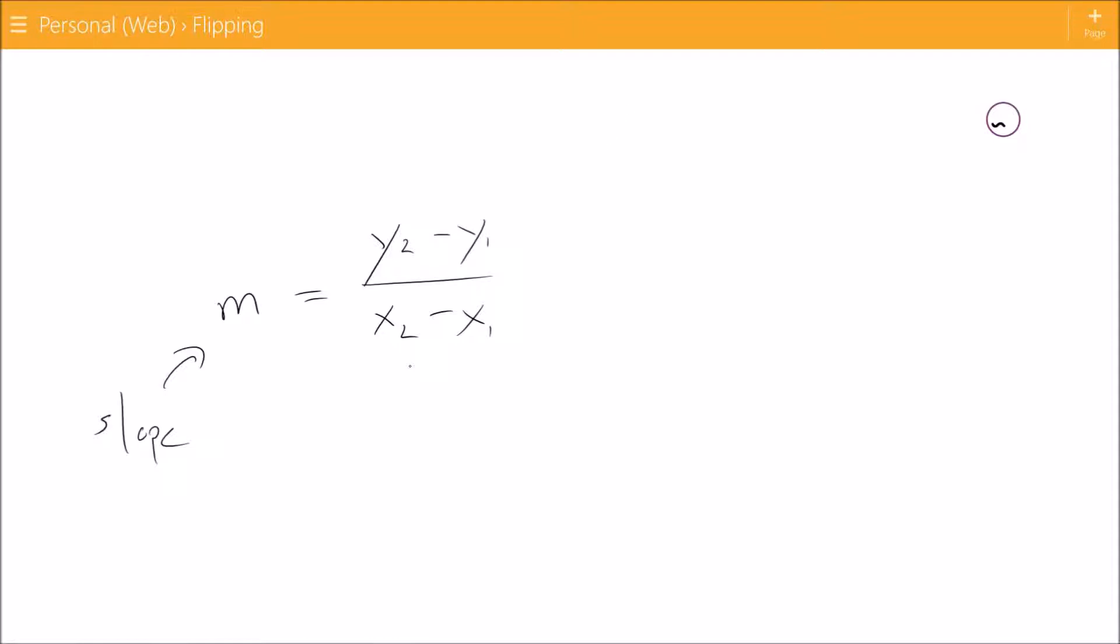These little numbers down there like the y2, that is just some subscript. It's just a way to name different points to make them different from each other, or different not necessarily points but different variables that could be similar. So I've got two y's here because I've got two y coordinates for points.